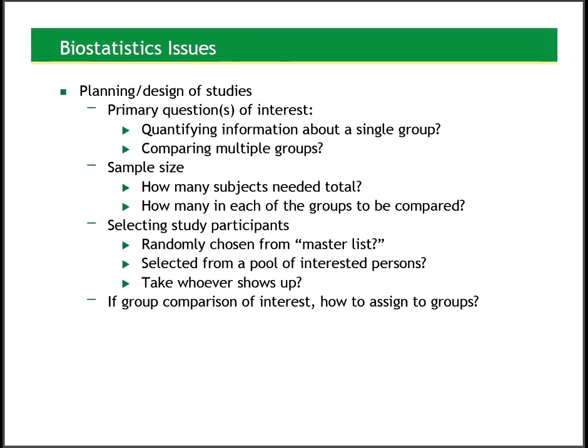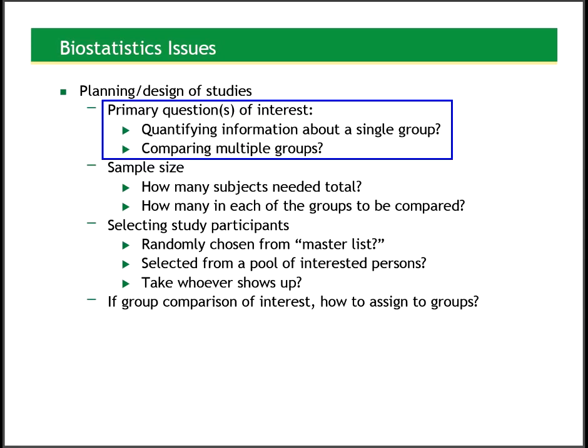First, Step 1: In the planning and design phase of a study, biostatisticians and those trained in biostatistics can help with identifying the primary research questions of interest and turning these into measurable variables. How can we quantify information about a single group? Do we want to compare multiple groups? How can we quantify the things we want to compare? What can be quantified, and what can't be quantified but is still important to record?